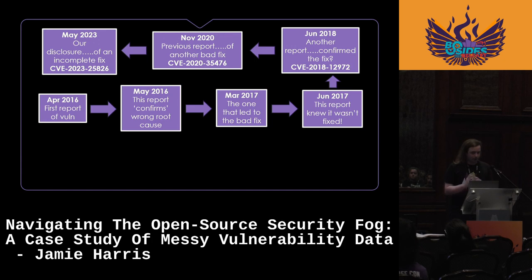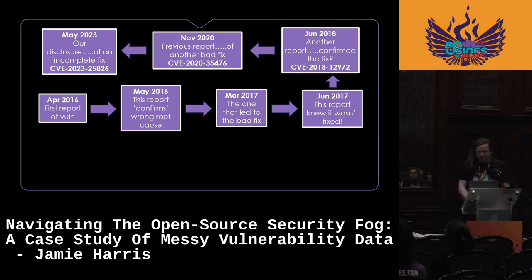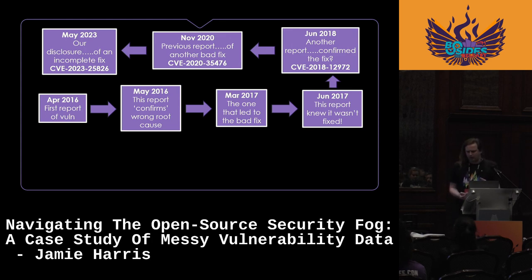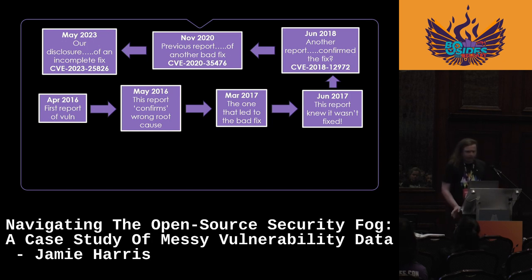Maybe when you go forward through it, it's actually quite simple. Two reports in 2016, independent of each other, flagging the issue — one confirming the wrong root cause, which led to a bad fix. A year later it was reported again, but that led to another bad fix. So later in that year someone said it's still not fixed, but it kind of fell by the wayside. Then in 2018 someone said they thought it was fixed — even though it isn't. Two years later someone else said no, it isn't fixed. Three years after that, we came along and said still not fixed, please fix it. We disclosed it, they tried to fix it, we validated it and we think it's fixed. So: clear as mud.